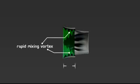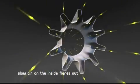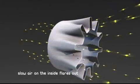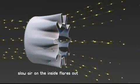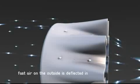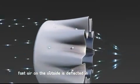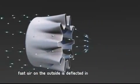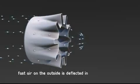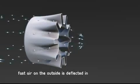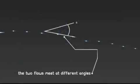Flowdesign's mixer ejector uses axial vorticity. It's like an Archimedes screw for air. When the two flows meet from different angles, they create a rapid mixing vortex.